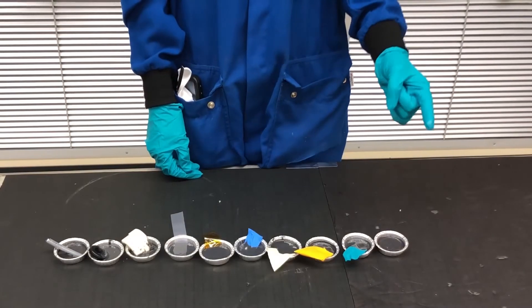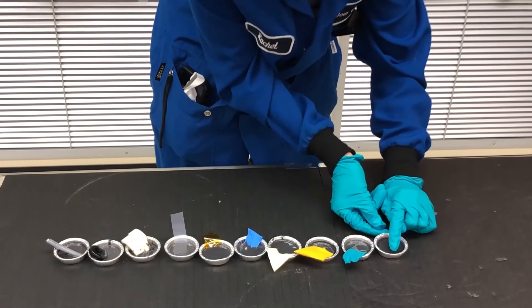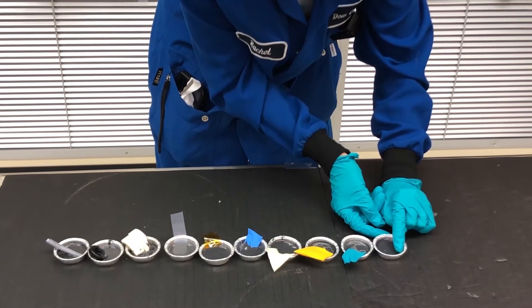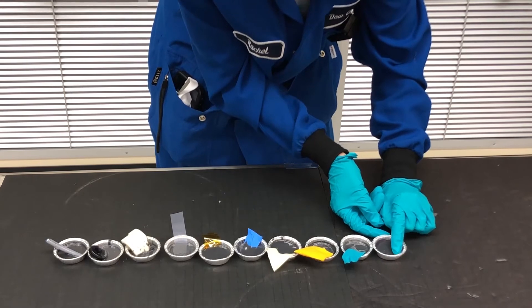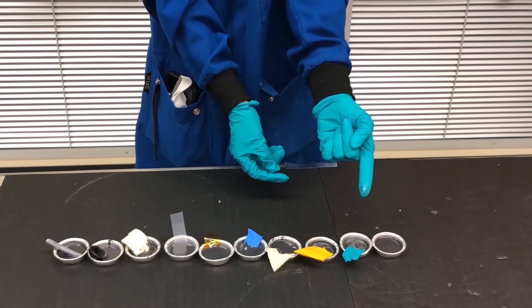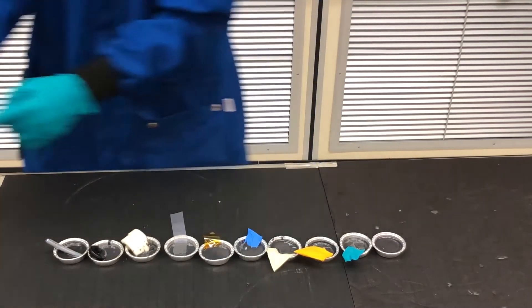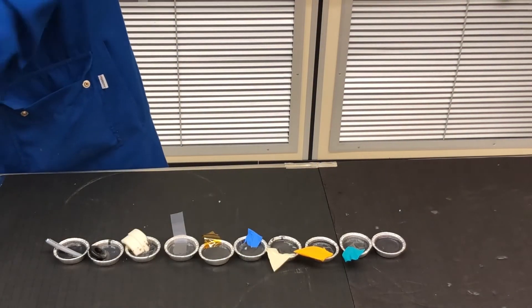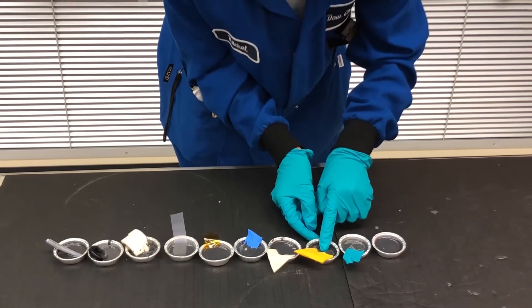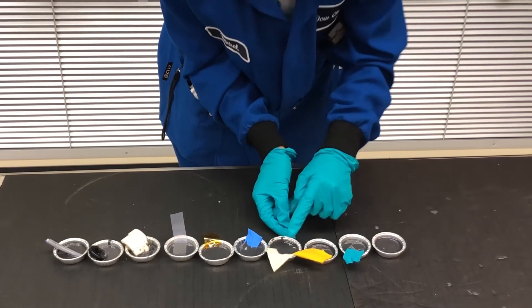Once the target cure time is up, come back with a gloved finger and press on each sample to make sure it's cured and tack-free. Check your glove after each sample to see if any residue comes off the sample. If you pick up residue, that's a good early indication that cure inhibition is occurring. Wipe off or change gloves, and then come back and continue to check each sample.